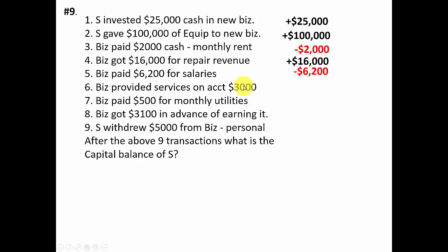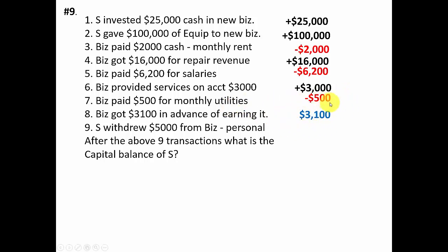Providing services on account for three thousand dollars increases owners equity by three thousand. Paying five hundred dollars in utility bills decreases owners equity by five hundred. Receiving thirty-one hundred dollars in advance of earning it has no effect on owners equity — it increases cash and increases a liability. The owner withdrawing five thousand dollars also decreases owners equity by five thousand. Combining all these pieces, the owners equity capital balance is one hundred thirty thousand three hundred dollars.